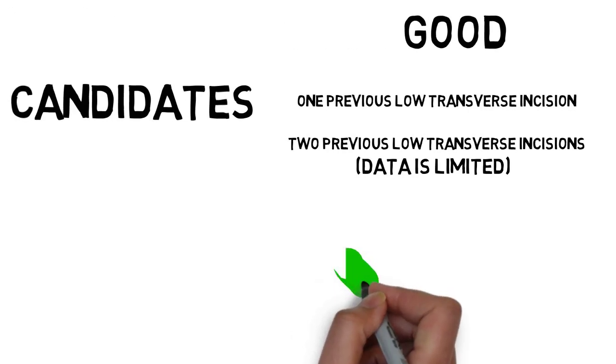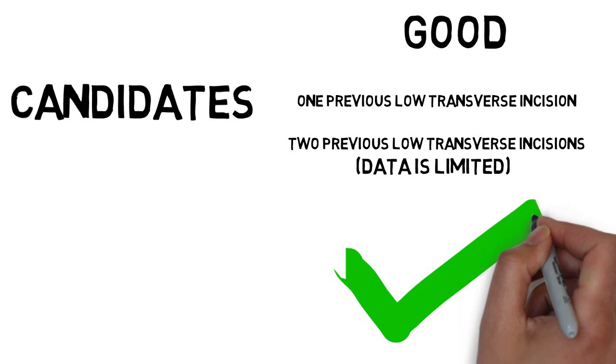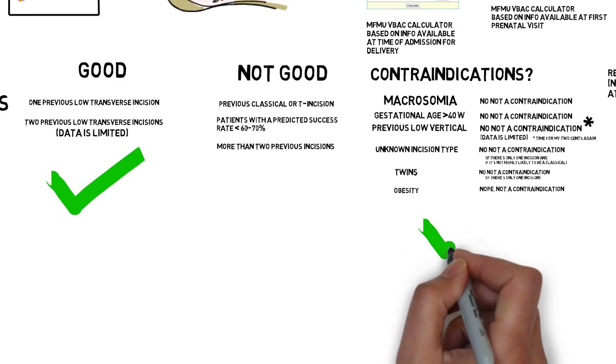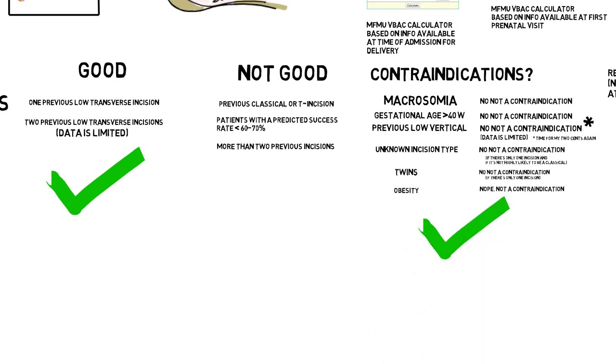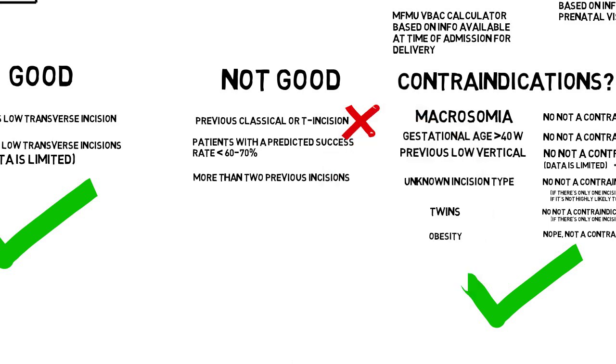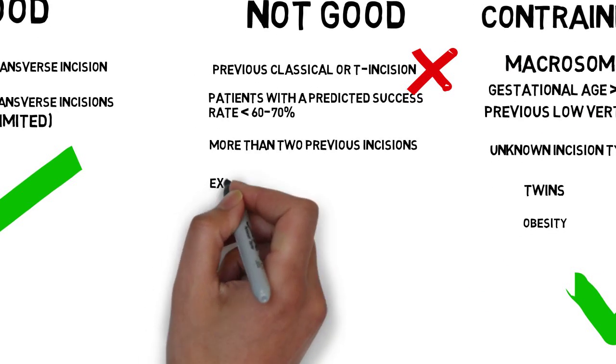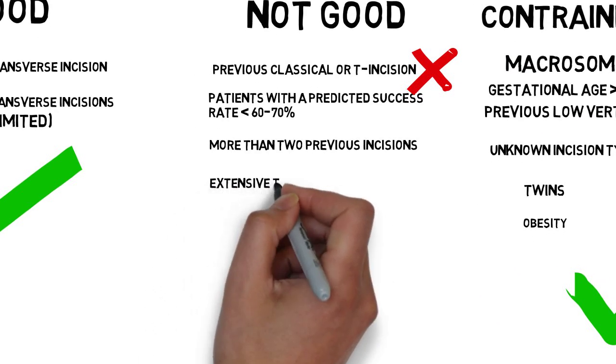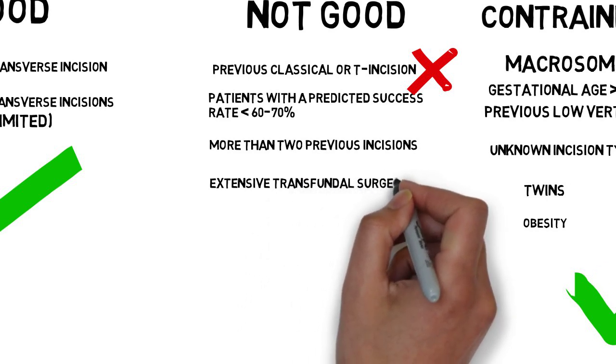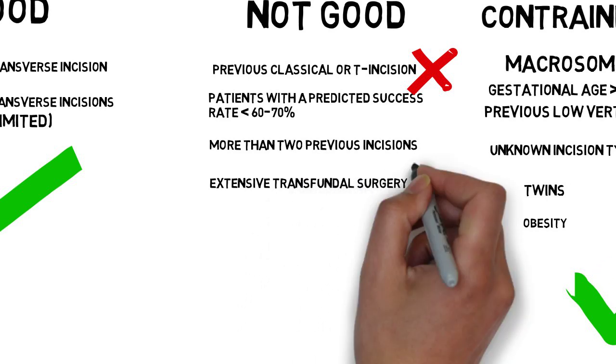Okay let's summarize who's a candidate for TOLAC. Most patients with one previous low transverse incision are candidates for TOLAC. That includes twins, previous low verticals, unknown incisions, big babies, and big moms. Patients who aren't candidates are those with a high risk for uterine rupture including previous classical incisions, T incisions, and extensive transfundal surgery as in transmural myomectomies entering the cavity.